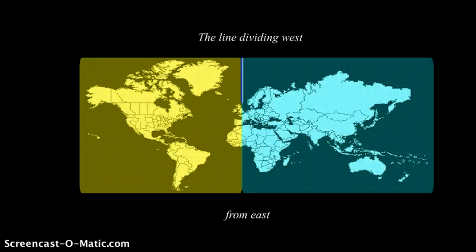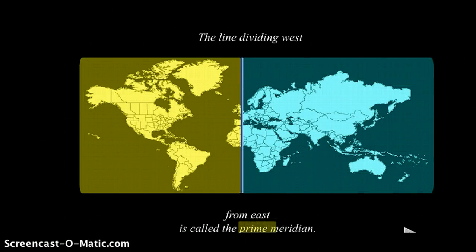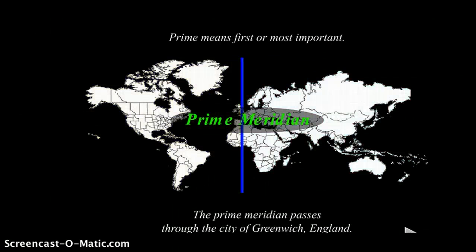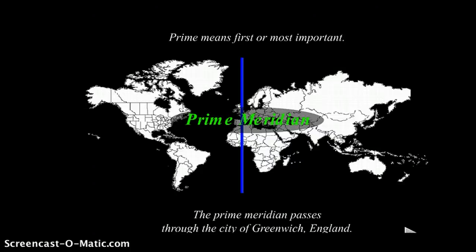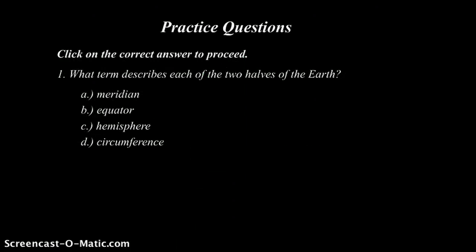The line dividing west from east is called the prime meridian. Prime means first or most important. The prime meridian passes through the city of Greenwich, England.